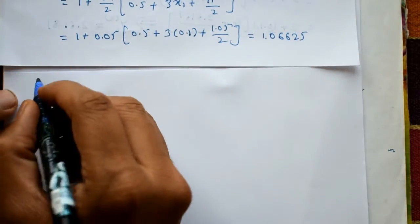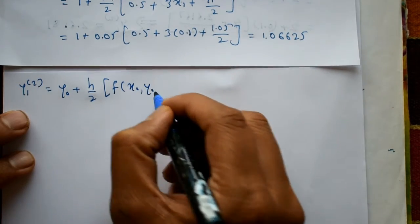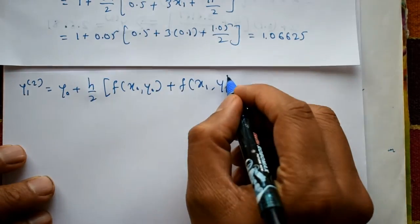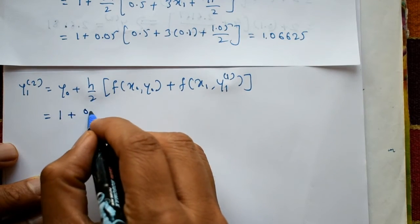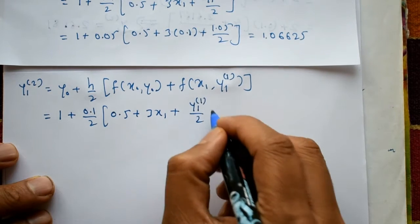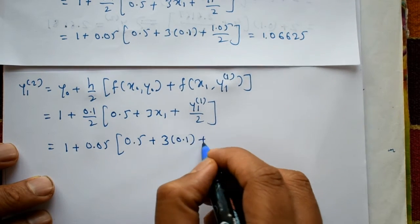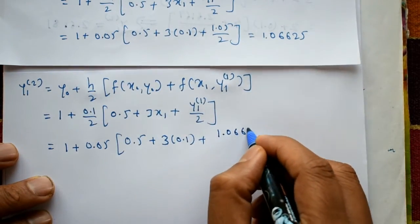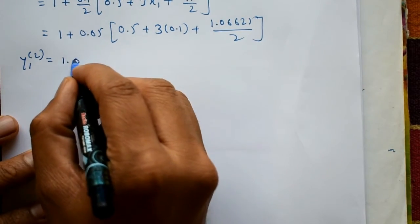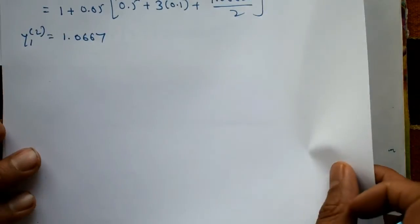The iteration continues since y1⁰ ≠ y1¹. Next approximation: y1² = y0 + (h/2)[f(x0, y0) + f(x1, y1¹)]. Substituting: 1 + 0.05 × (0.5 + 3(0.1) + 1.06625/2). Using a calculator, we get y1² = 1.0667. One more iteration is required.